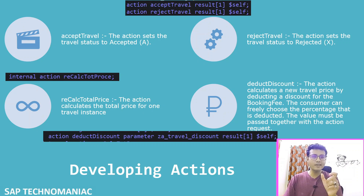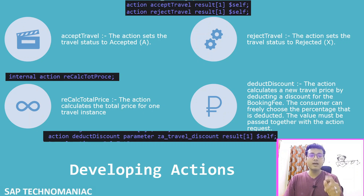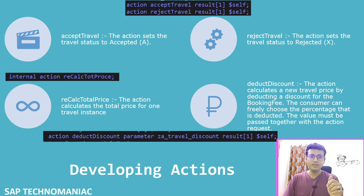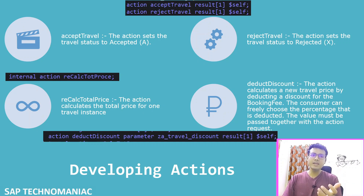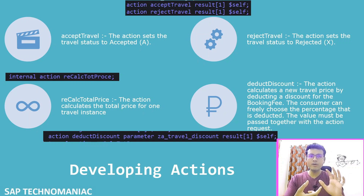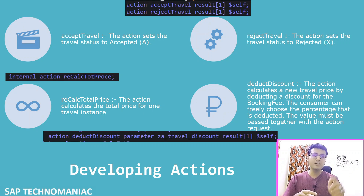The deduct discount action will add an additional button on the list report page and object page. As soon as you click on that button, a pop-up will appear where you have to enter a percentage value. Based on that value, the booking fee will be discounted. For example, if you currently have 100 rupees as the booking fee and you give a five percent discount.